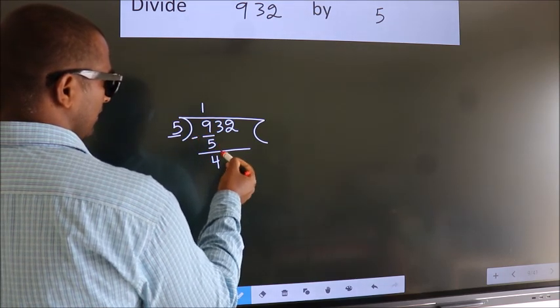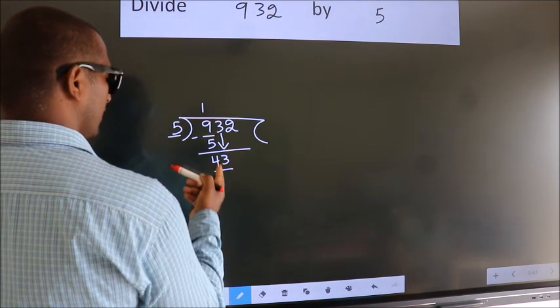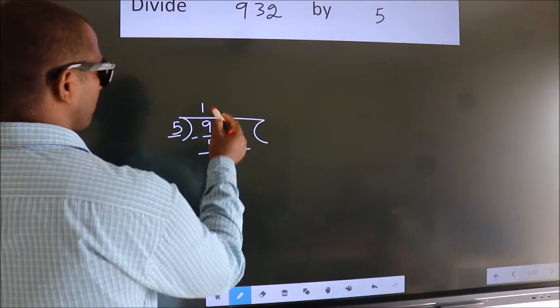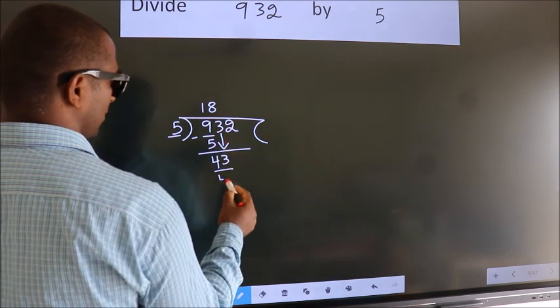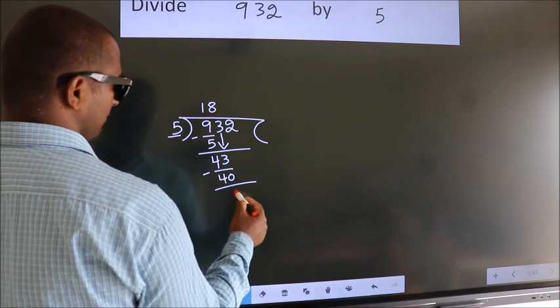After this bring down the beside number. So 3 down. So 43. A number close to 43 in 5 table is 5 eights 40. Now we subtract. We get 3.